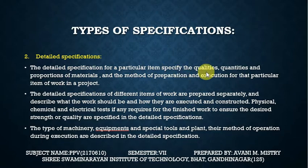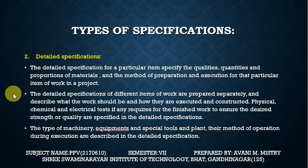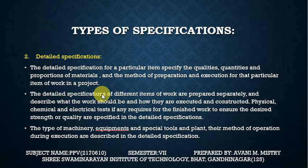The detailed specification for a particular item specifies the qualities, quantities, and proportion of the materials, and the method of preparation and execution for that particular item of the work in a project. The detailed specifications of the different items of the work are prepared separately and describe what the work should be and how they are executed and constructed. Each item gets its own detailed description and specification.